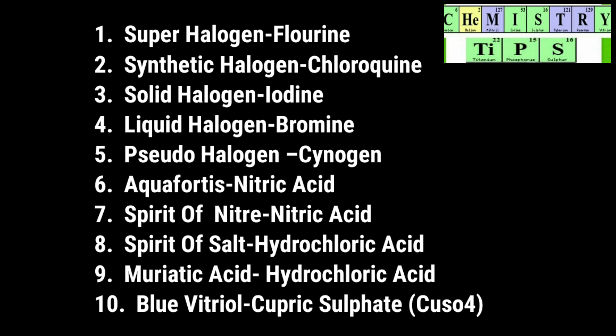First question: What is known as super halogen? The correct answer is fluorine. Then synthetic halogen — chlorine is a very good example for synthetic halogen. Then solid halogen — it is iodine. Liquid halogen — it's bromine. Pseudo halogen — cyanogen is an example for pseudo halogen.